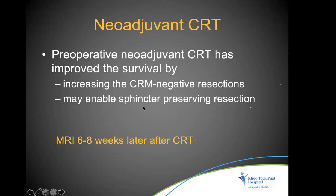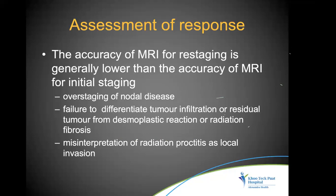Patients with higher-stage tumors who cannot undergo upfront surgery receive neoadjuvant chemoradiotherapy, which improves survival by downstaging disease, improving rates of R0 (negative margin) resection, and may enable sphincter-preserving surgery. MRI performed six to eight weeks after chemoradiotherapy assesses the treatment response. Accuracy of MRI for restaging is generally lower than for primary staging because we tend to over-stage nodal disease and cannot reliably differentiate residual tumor from desmoplastic reaction or radiation effects.